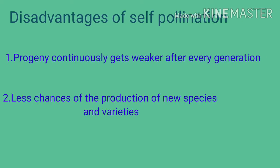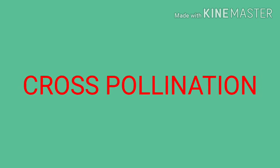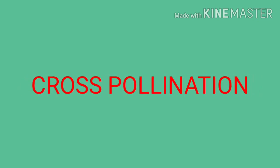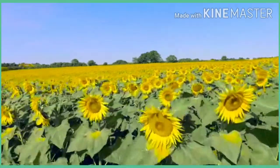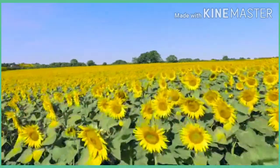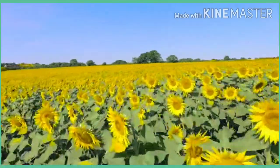Disadvantages of self-pollination: progeny continuously gets weaker after every generation, and there are less chances of the production of new species and varieties. Coming to cross-pollination: the deposition of pollen grains of a flower to the stigma of another flower of a different plant of the same species is called cross-pollination.